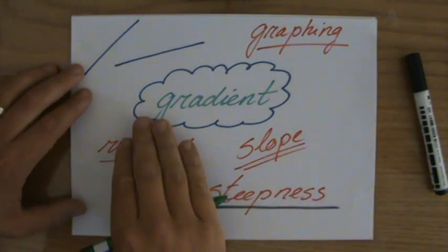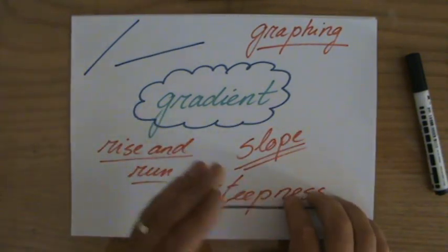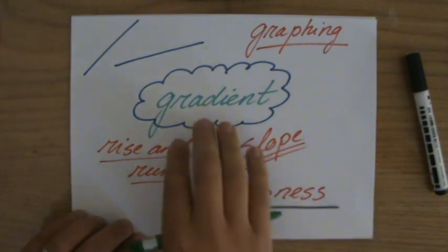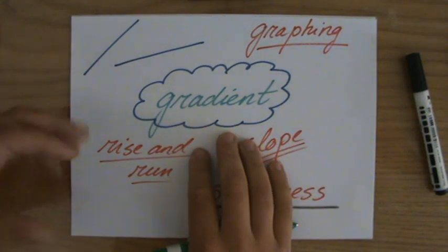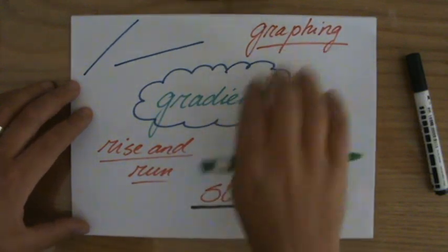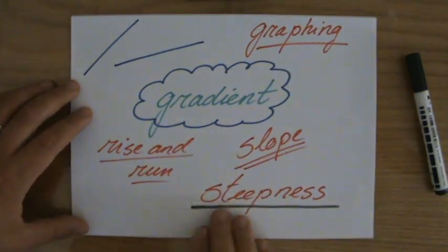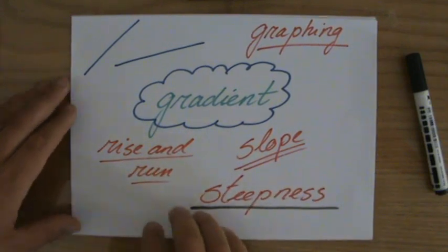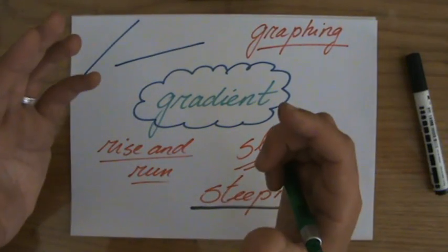Continuing talking about gradients — make sure you have seen part one. We said that the gradient of a line, talking about graphs, has something to do with the steepness of that line. The slope, rise and run, they all mean the same: the gradient.